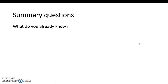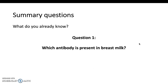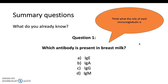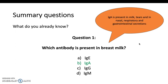Let's go over the questions again. Which antibody is present in breast milk — IgE, A, G, or M? It's IgA. IgE is type 1 hypersensitivity reactions. IgA is found in secretions. IgG is humoral immunity from B cells. IgM is the first responder to antigen exposure.